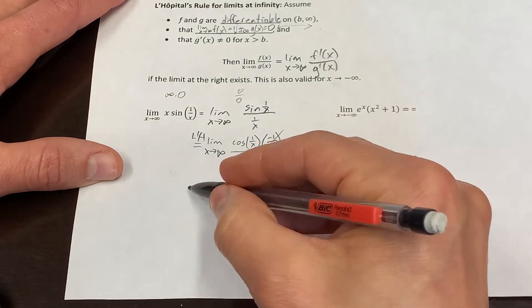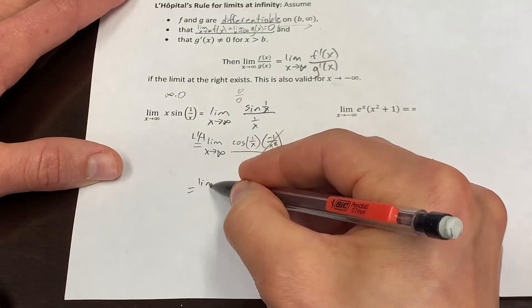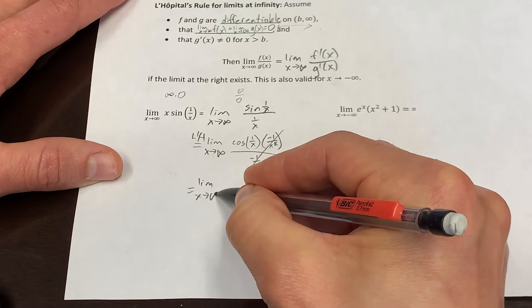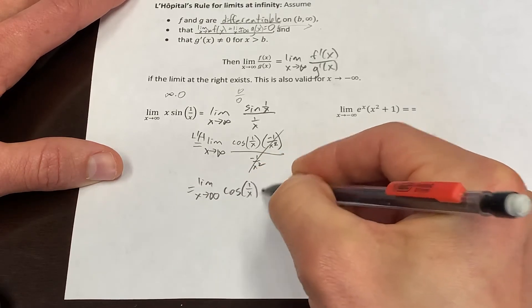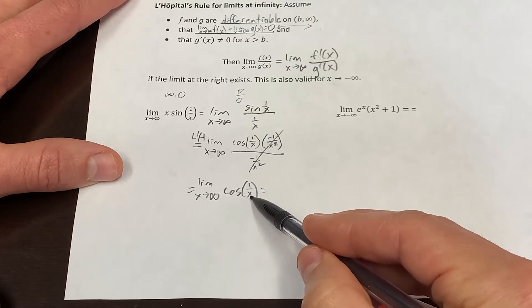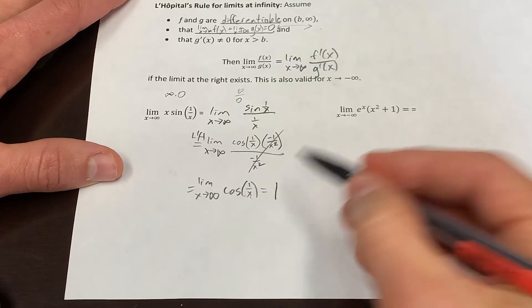Hopefully it's not a shock that those cancel. So then the real question is what happens as x goes to infinity of cosine of one over x? And the answer is this internal part is getting closer and closer to zero. Cosine of zero is one.